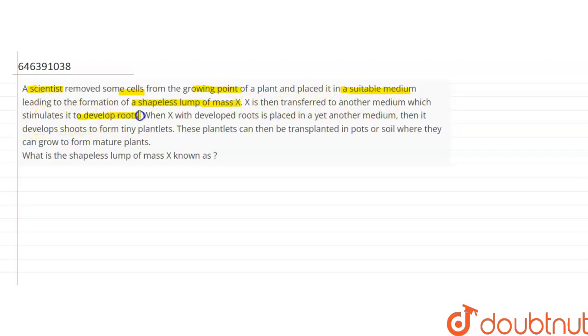Then X with a developed root is placed in yet another medium. Then it develops shoot to form a tiny plantlet. These plantlets can then be transferred in pot and soil where they can grow to form a mature plant.